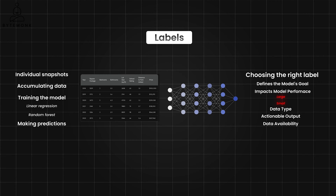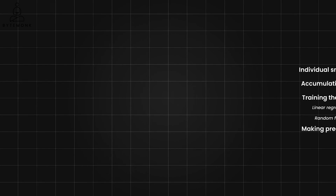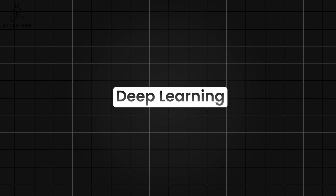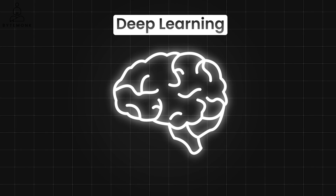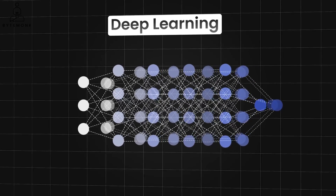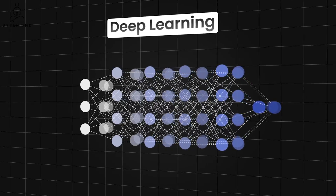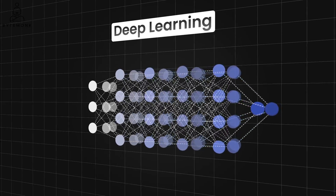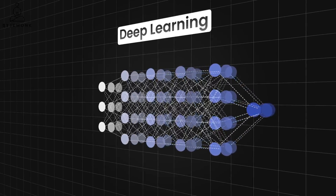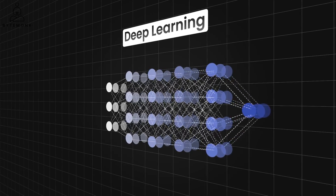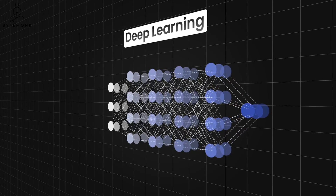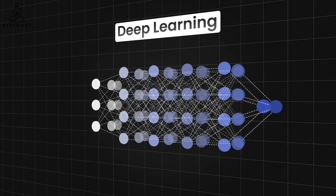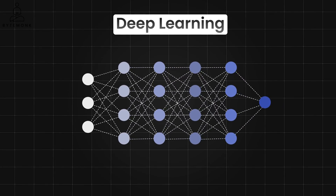But what if we don't have neatly structured data like we do in this example? Then we can use something called deep learning, a branch of machine learning. Deep learning is inspired by the structure of the human brain and involves artificial neural networks with multiple layers — these layers give depth to the learning process. Unlike many traditional machine learning algorithms, deep learning models can automatically discover the relevant features within raw data for specific tasks, removing the reliance on hand-engineered features.